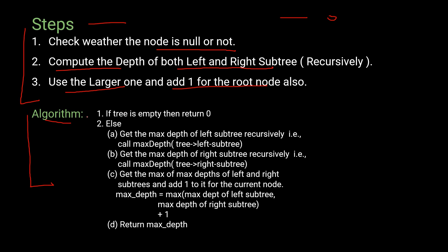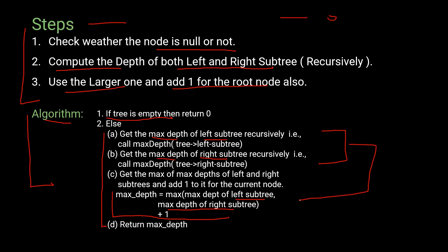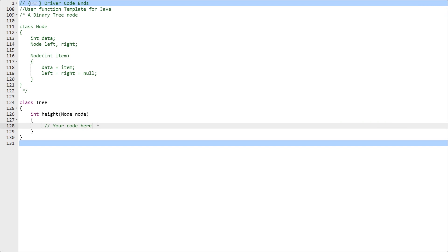The algorithm is: if the tree is empty, return 0. Otherwise, get the maximum depth of the left subtree by recursion, get the maximum depth of the right subtree by recursion, then compute: max_depth = max(left_depth, right_depth) + 1, and return max_depth.